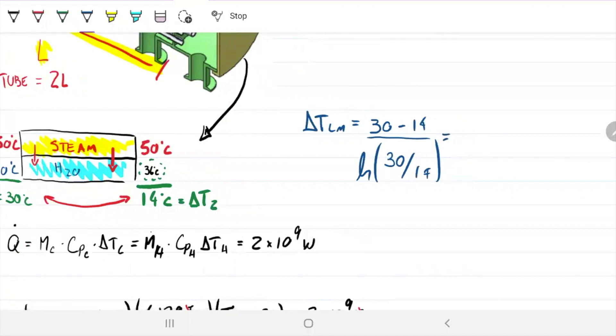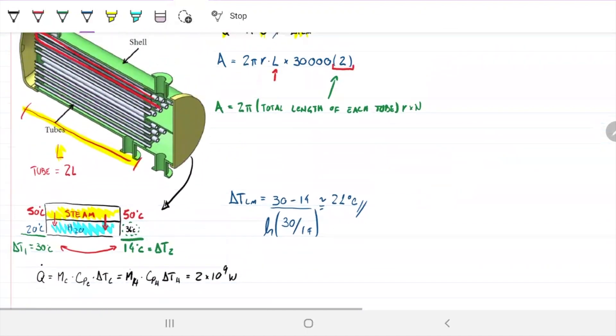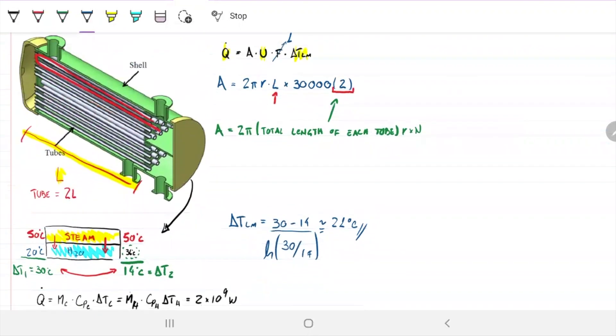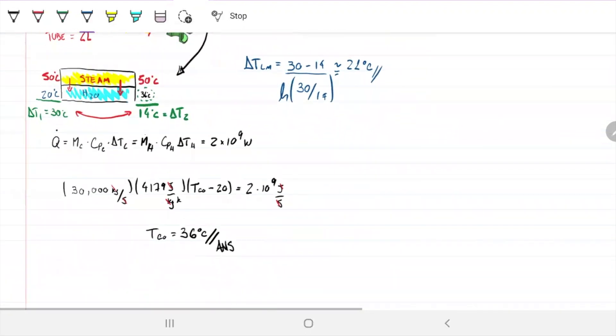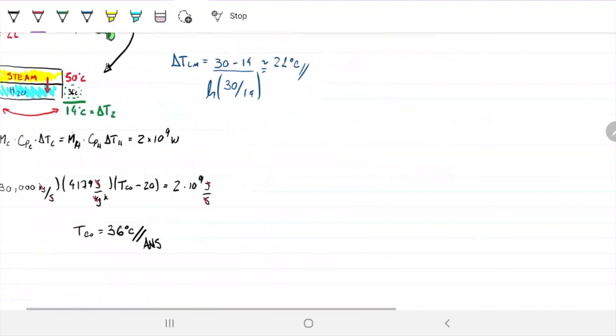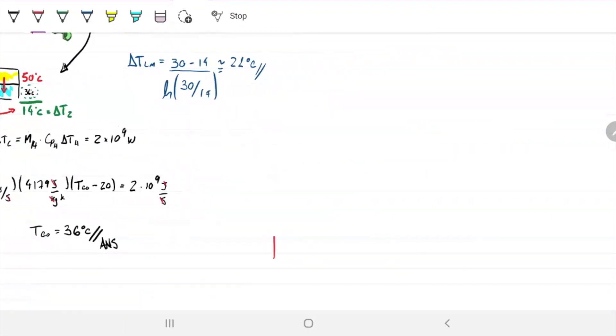If it were a simple mean, we'd have exactly the middle point on a linear scale. But since it's not linear, we're going to have something a bit smaller. Delta T log mean will be (30 minus 14) divided by the natural log of (30 divided by 14). This turns out to be about 21, or 20.99 something. So that's one of the things we needed to solve our top equation there.